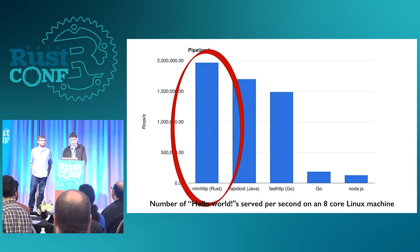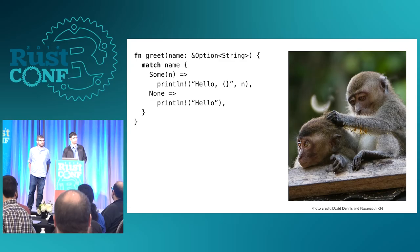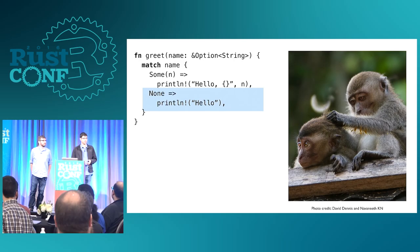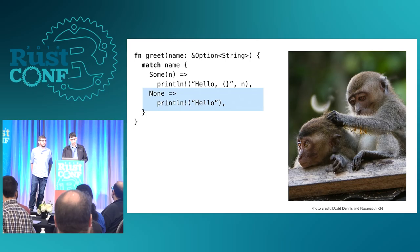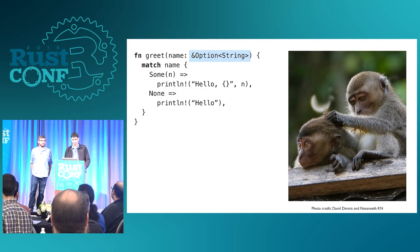Over time the compiler becomes like a trusted pair programmer who's looking over your code and helping you think of cases you might have overlooked. In a simple routine that takes an optional string and prints it out, we can already see this — instead of a null pointer we have an Option type, we have to notice the user might not have a name, and we can't get a null pointer exception. The reference to an Option of String is what lets us avoid a garbage collector and avoid data races, indicated with just one sigil.